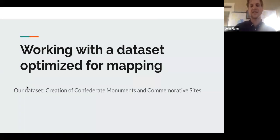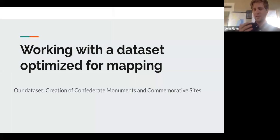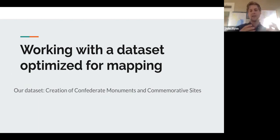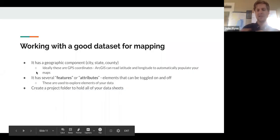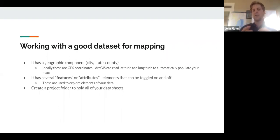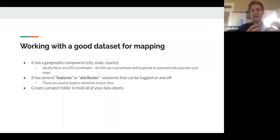This dataset is really great because it has about 3,000 entries and all the research has already been done. When we work in the humanities, our research is often contained in data sheets, or primary documents like account ledgers or government documents that are already in Excel spreadsheets — just like John Snow's. What makes a dataset work really well for mapping is, first, it has a geographic component — ideally GPS coordinates, because ArcGIS can automatically read latitude and longitude to populate our maps. Even if you only have a county or city, you can still work manually with that.